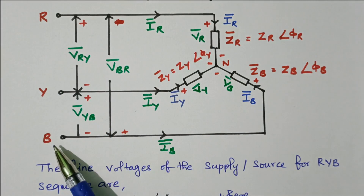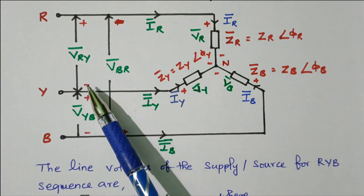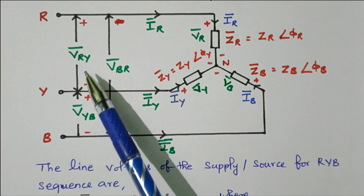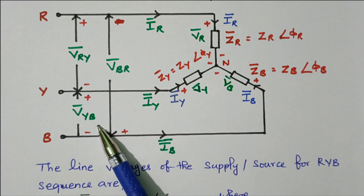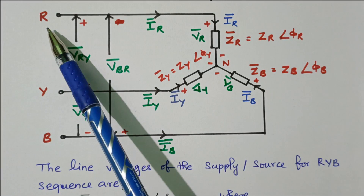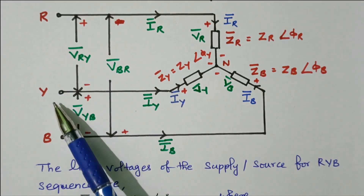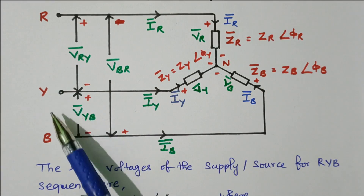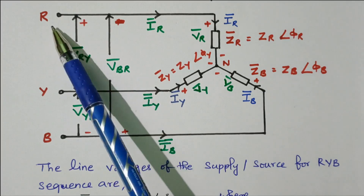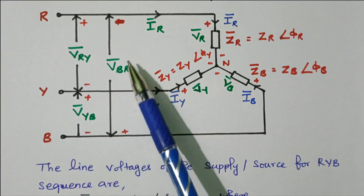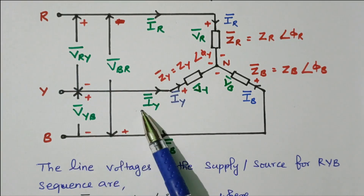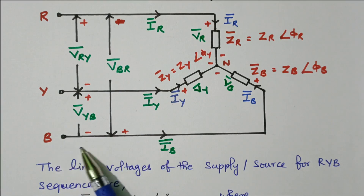Now we will see RYB — 3 phases. This is the line current flowing between the two lines R and Y. VRY is the line voltage between R-phase and Y-phase. VYB is the line voltage between Y-phase and B-phase. Similarly, VBR is the line voltage between B-phase and R-phase. Then the line currents are: IR — current flowing from R-phase, IY — current flowing from Y-phase, IB — current flowing from B-phase.